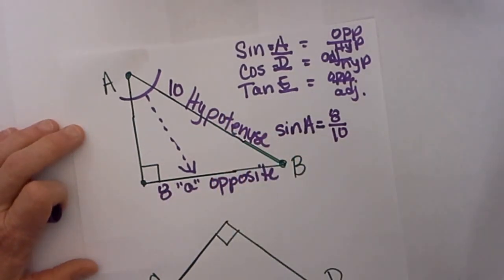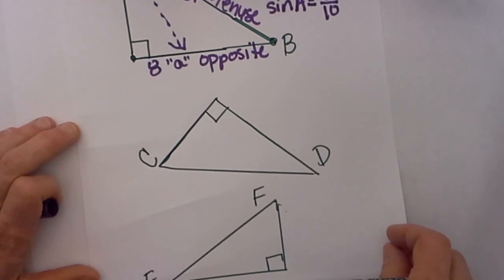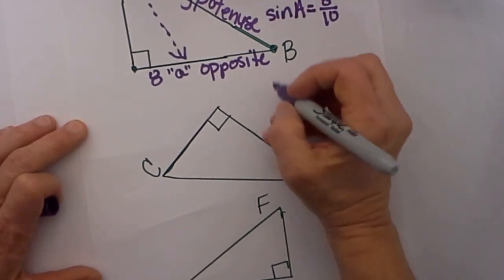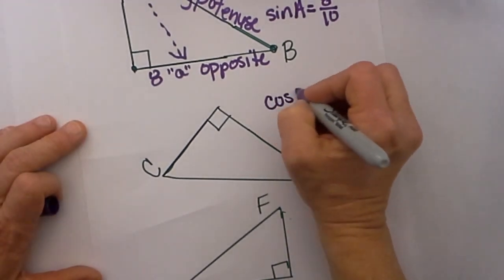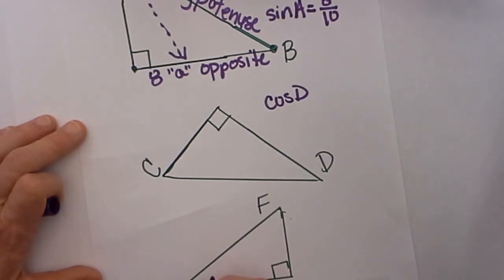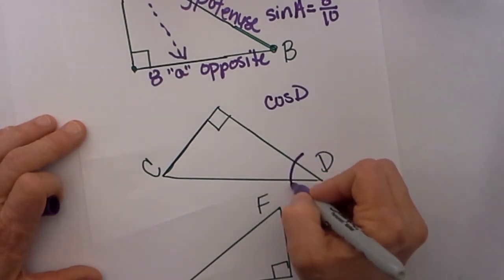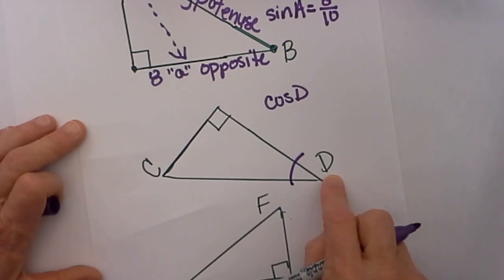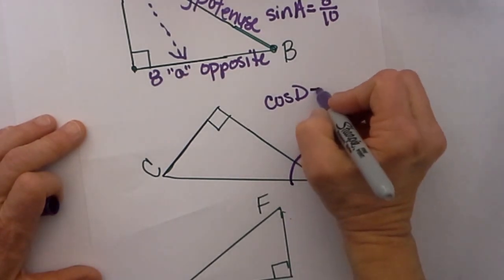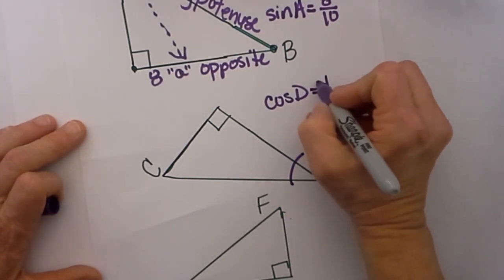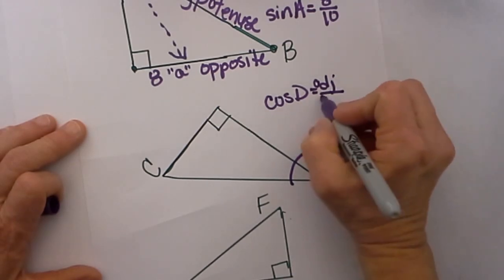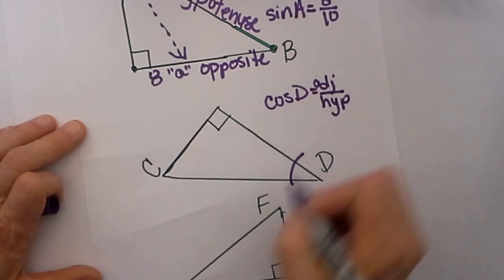Now let's look at the cosine of an angle. Now we are going to take the cosine of D. So I have to change my perspective. I have to start over here at the acute angle D and I have to find my adjacent over hypotenuse. That is the adjacent side over the hypotenuse.